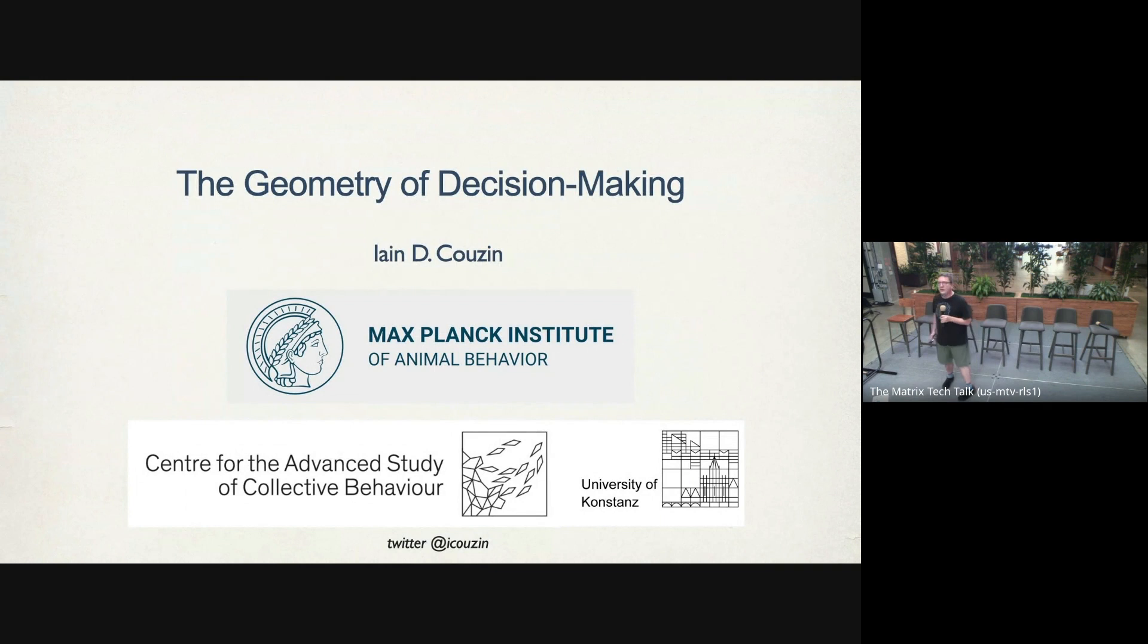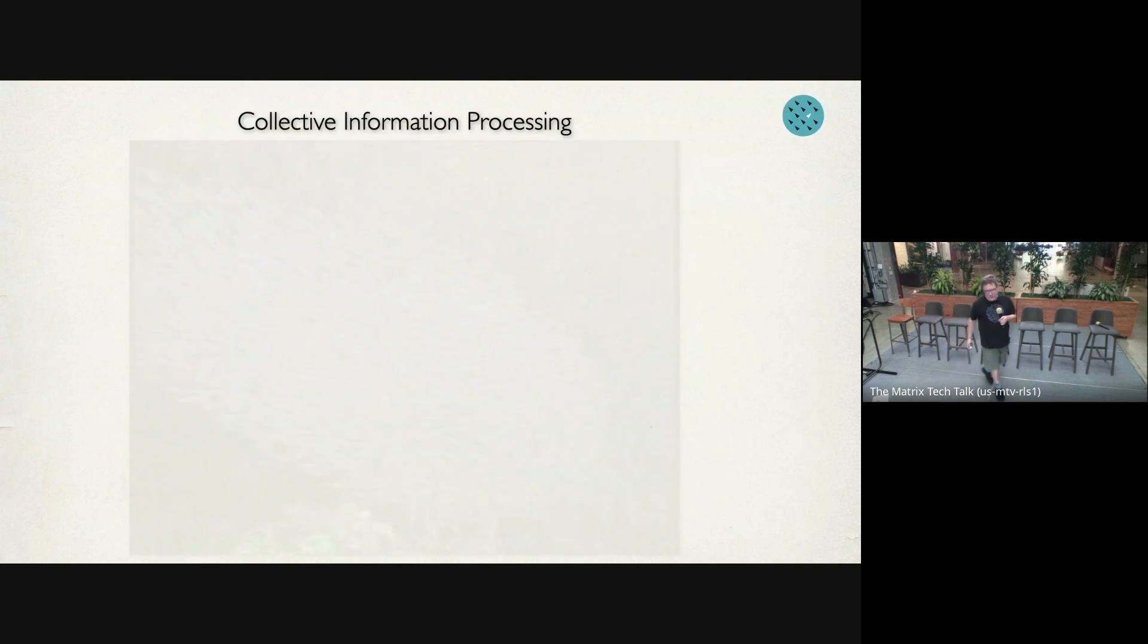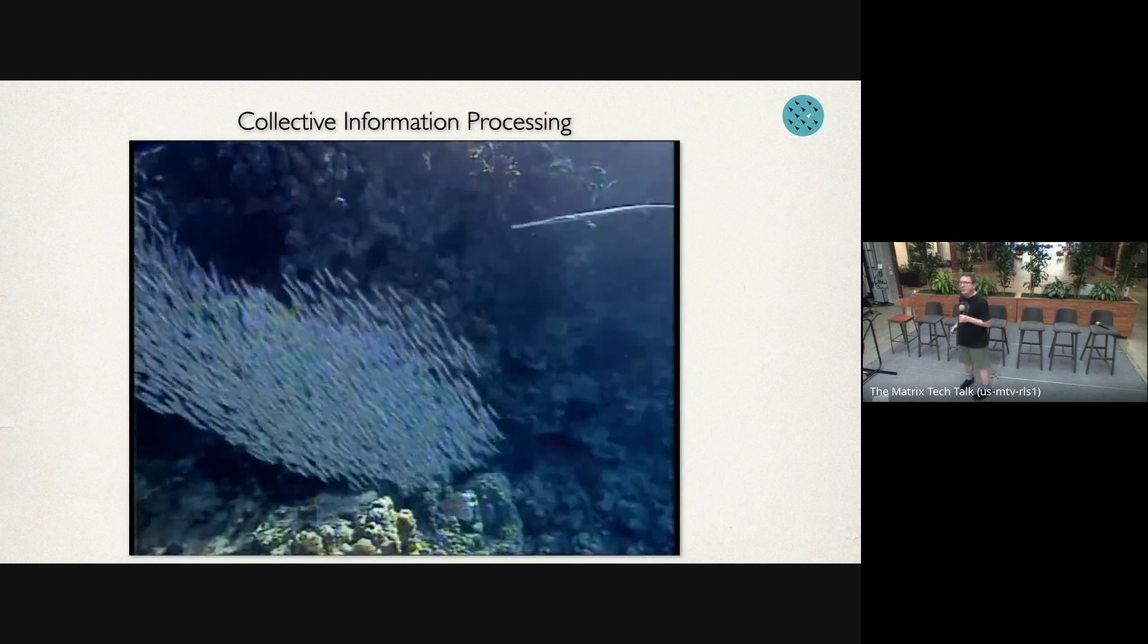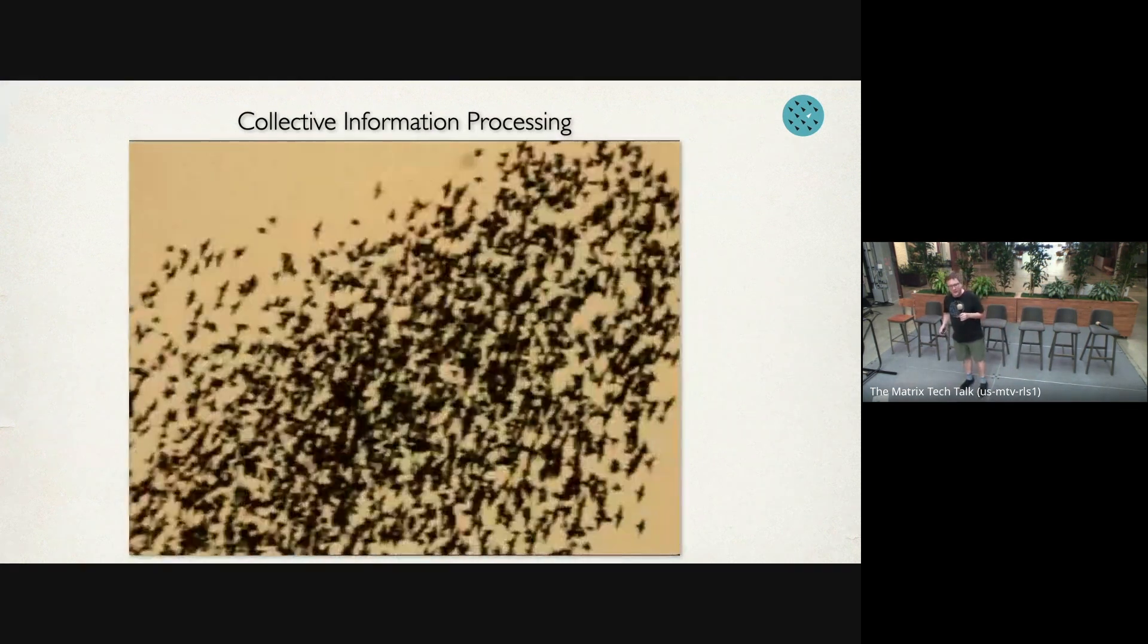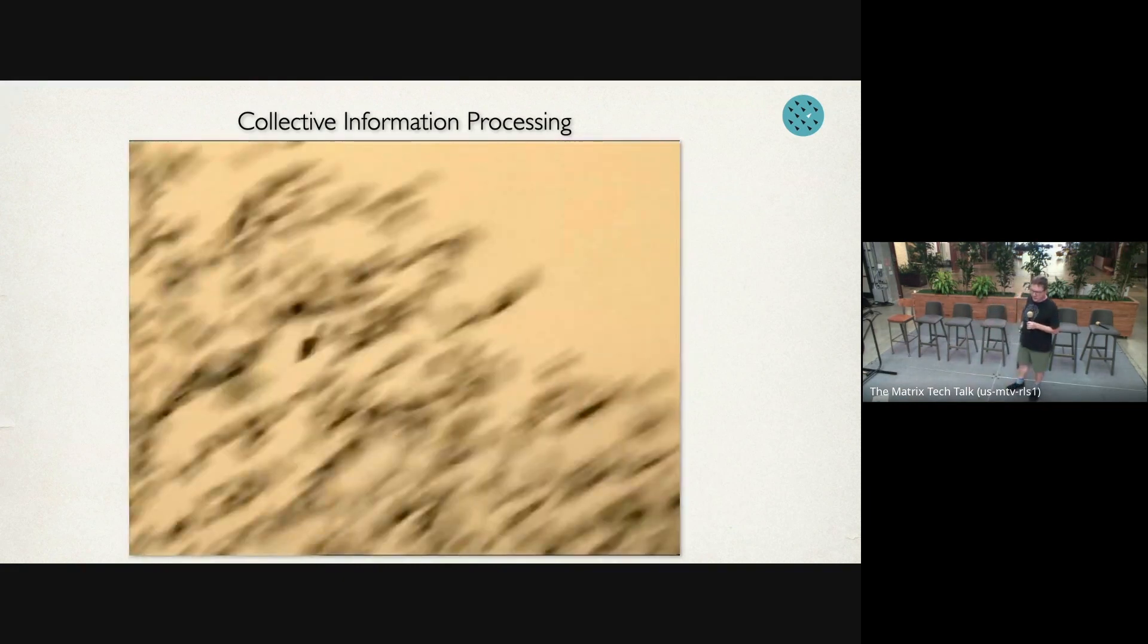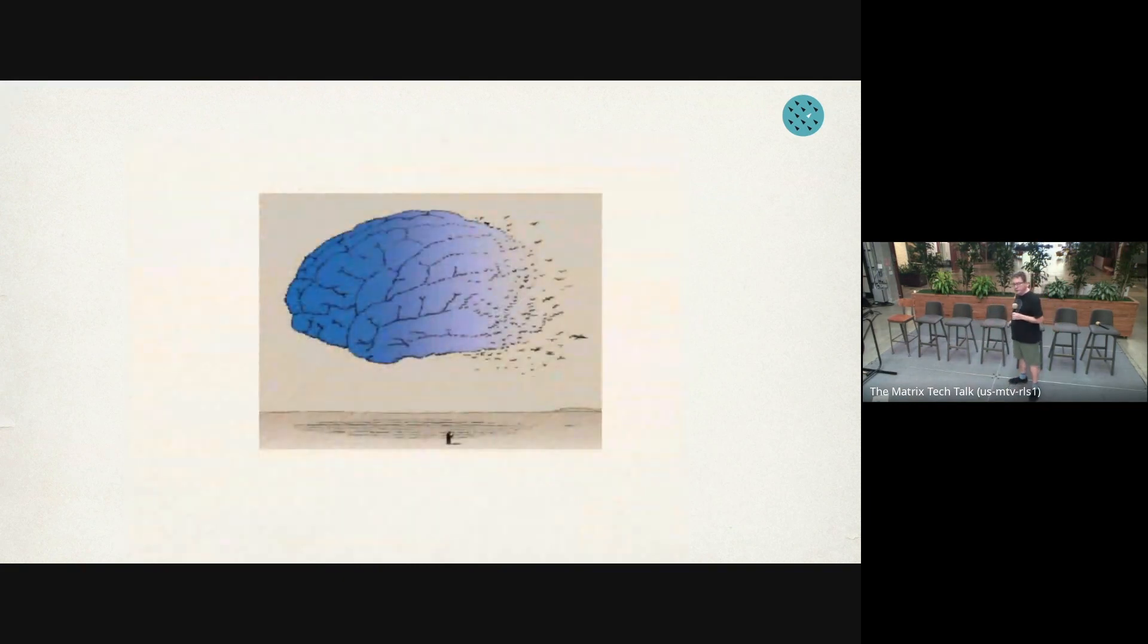Hello everyone, so I work on collective animal behavior, and you may have seen footage like this schooling fish or flocking birds. But what I'm going to talk to you about today is how insights from these systems have actually led me to start studying what's going on within the neural collective inside individuals' brains, and in particular to ask questions about how do animals represent space and time.